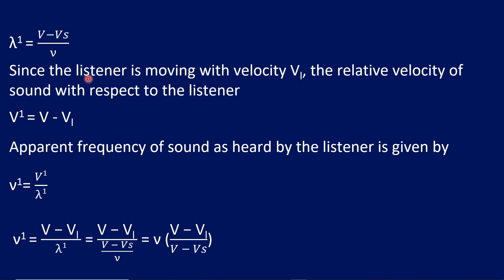The listener is moving with velocity Vl. The relative velocity of sound with respect to the listener is V minus Vl. The velocity of sound is V, and the listener velocity is Vl, so the relative velocity V dash is equal to V minus Vl.